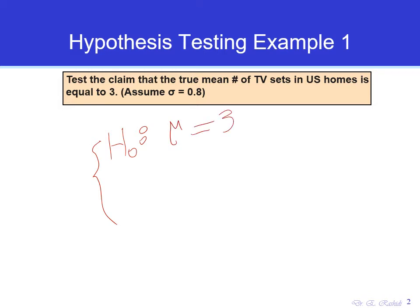The alternative hypothesis is going to oppose that statement. So it's going to say the average is not equal to 3. Since we have a strict inequality in our alternative hypothesis, this means that we are dealing with a two-tailed test.